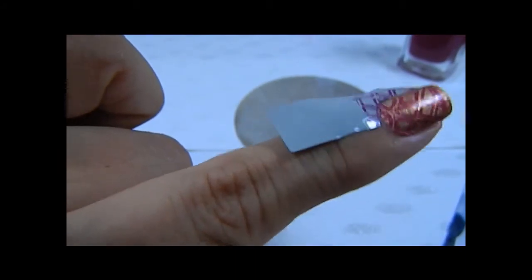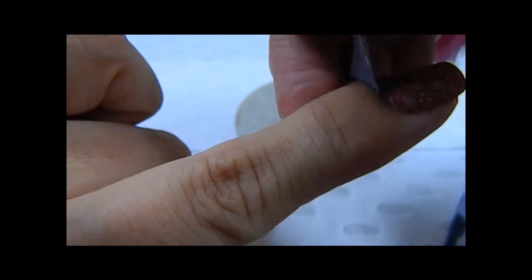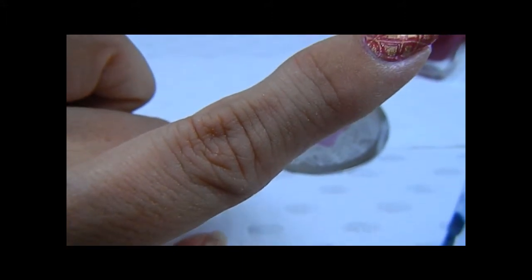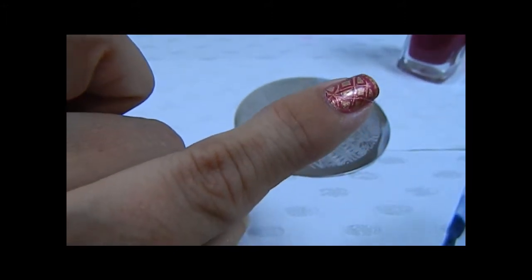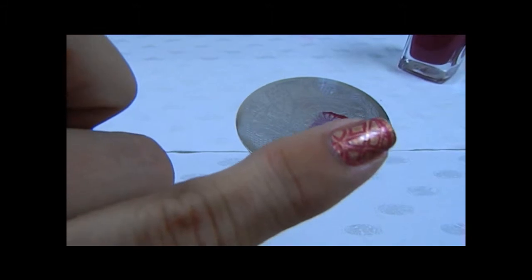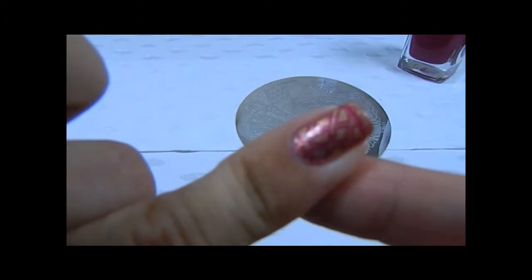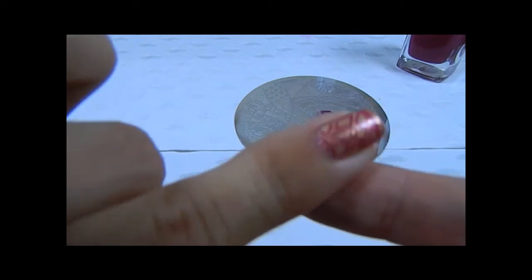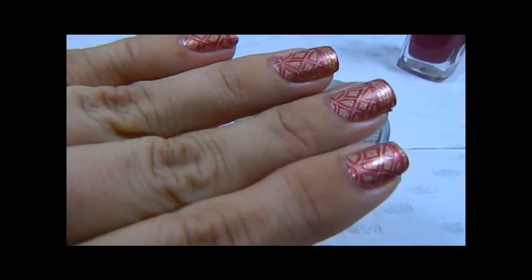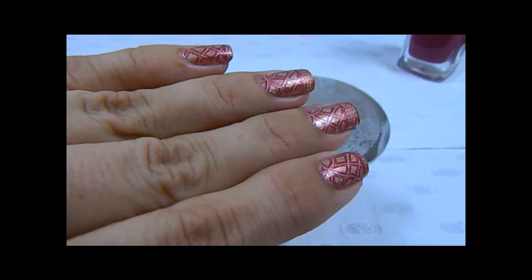And then you just peel them off. Clean up time is massively reduced which is great with stamping polish which is so pigmented it can really stain your skin, so the less clean up the better. And that's it.